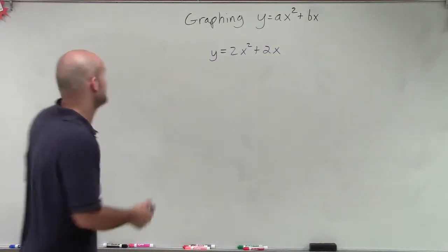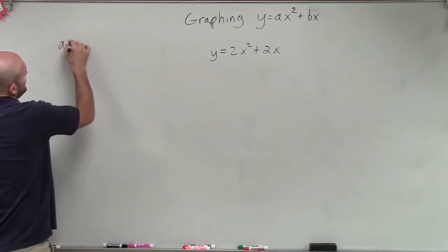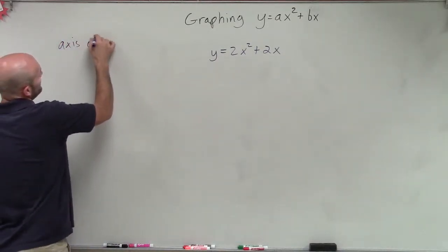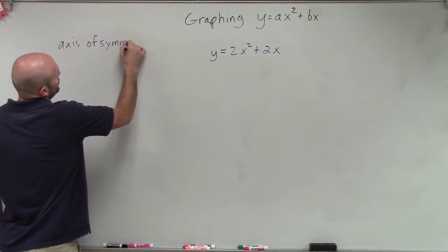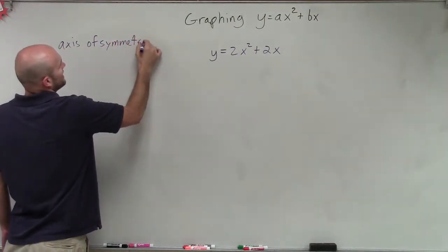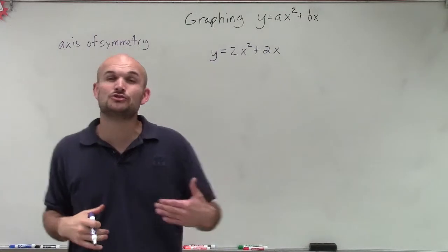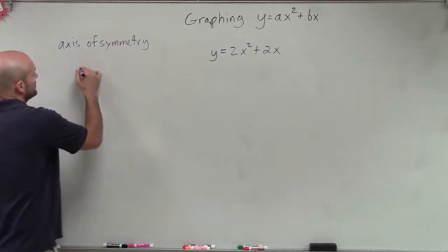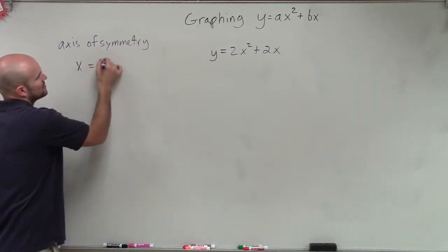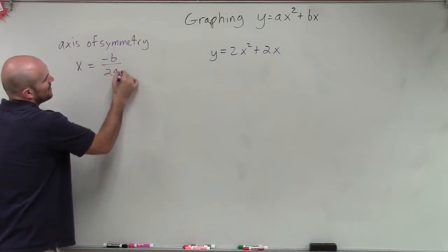We need to make sure the first thing we do is find our axis of symmetry. Because when graphing, we need to make sure when we create a table of values, we pick two points to the left and two points to the right of the axis of symmetry. So remember, the equation for the axis of symmetry is opposite of b divided by 2a.